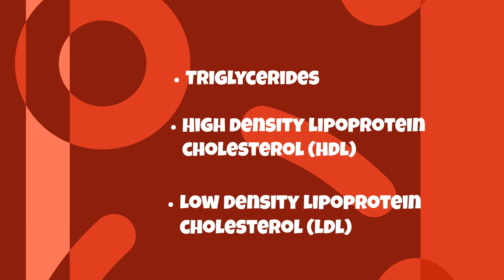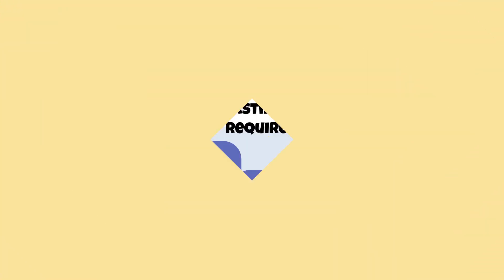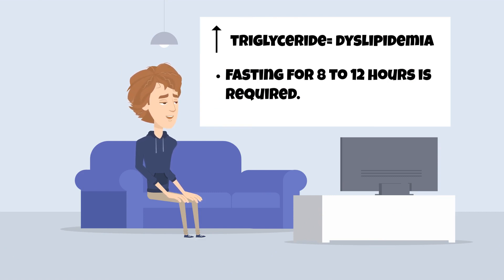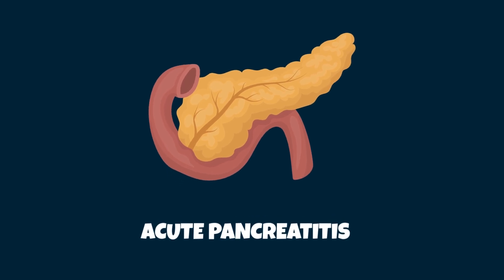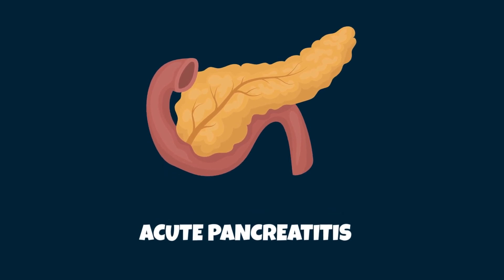High triglyceride levels can indicate dyslipidemia. One thing to note when measuring triglyceride levels is that fasting for 8 to 12 hours is required to get an accurate result, as non-fasting triglyceride results may be falsely elevated. If triglyceride results are higher than normal levels, this needs to be addressed, since severe hypertriglyceridemia is a risk factor for acute pancreatitis, which is inflammation of the pancreas.